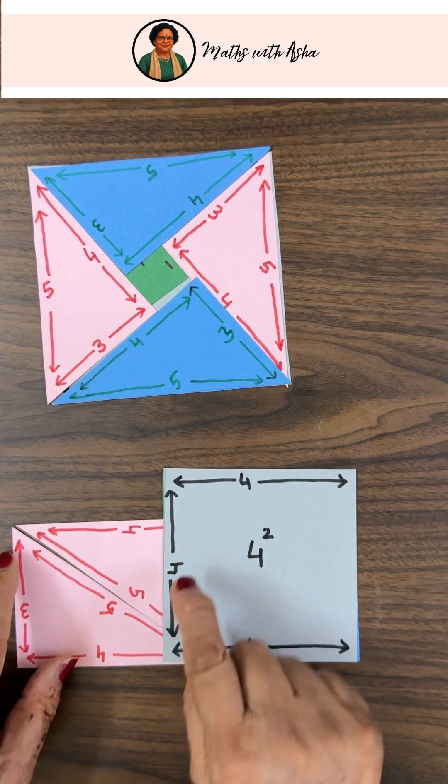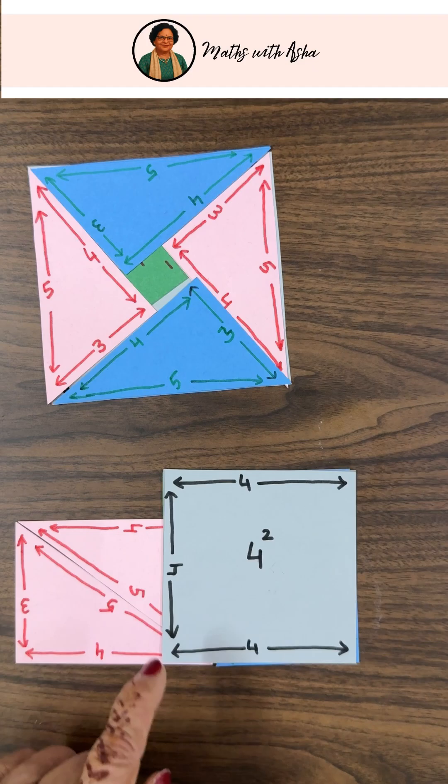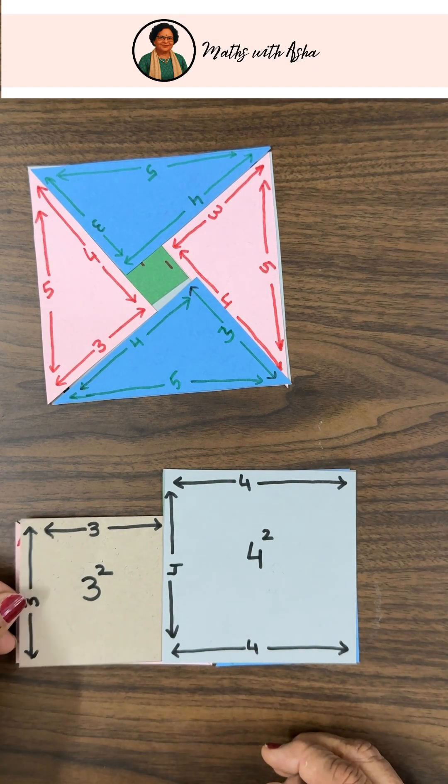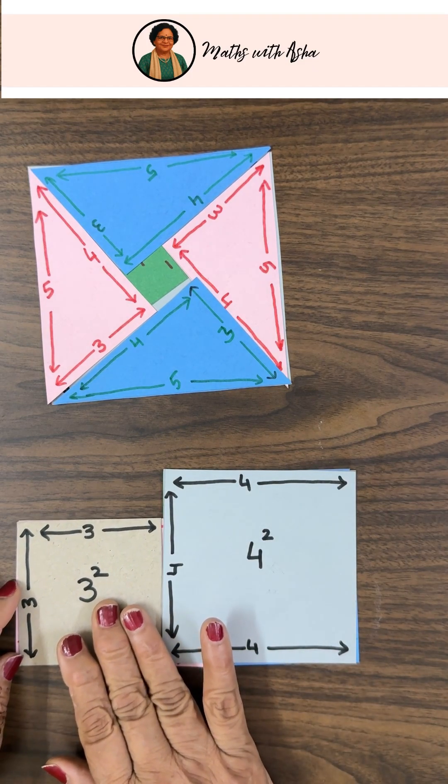Now, this is 3 and from 4, we have taken away 1 unit. So this is a square of side 3 units. What have we got?